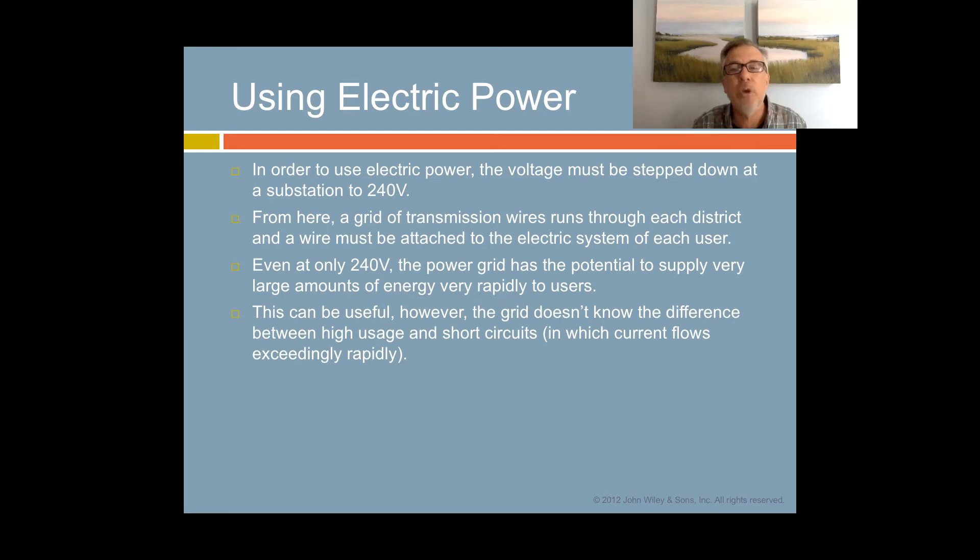As you might imagine, that can be very dangerous if the flow gets too much. The grid doesn't know the difference between high usage and short circuits. Short circuits are when your wires touch the ground and there is virtually no resistance to the current, so the current flows exceedingly rapidly. The potential to deliver huge amounts of energy to one place at one time is very high. When a lot of energy is delivered to one place at one time, it can cause all sorts of hazards: intense amounts of heat, burns, fires, even explosive type conditions if there's a fuel source nearby.